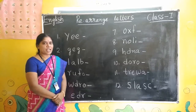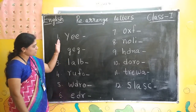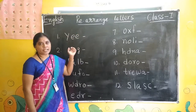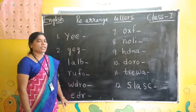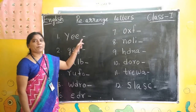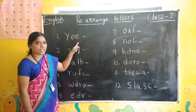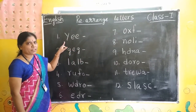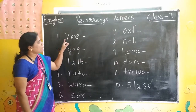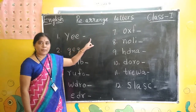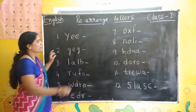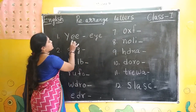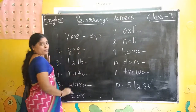Welcome to English class. In today's class we have some letters — jumbled letters. We have to rearrange the letters in the correct way. We have to convert this into a meaningful word. E, Y, E, I — we arrange these letters into a meaningful word.